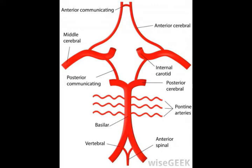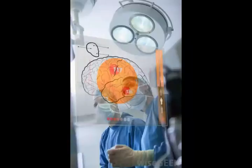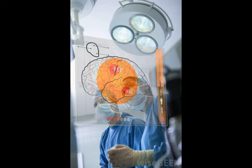The brain requires a constant flow of blood to keep its tissues healthy and to support nerve function. It has been estimated that the brain uses approximately 25% of the oxygen in the body and almost 20% of the blood. Unlike other body tissues, the brain cannot store fuel, so it needs a continuous supply of glucose that constant blood circulation can provide. The vessels of the brain circulate blood throughout the brain to ensure that all of its nerves and cells receive the nutrients they need.